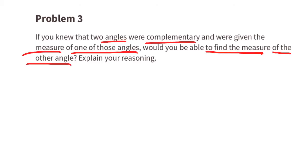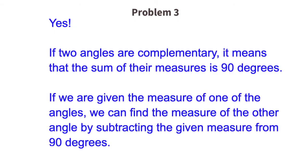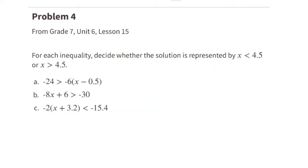Problem number three: if you knew that two angles were complementary and were given the measure of one of those angles, would you be able to find the measure of the other angle? Yes. If two angles are complementary, it means the sum of their measures is 90 degrees. If we are given the measure of one angle, we can find the other by subtracting the given measure from 90 degrees.